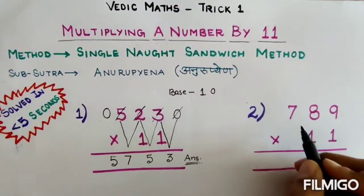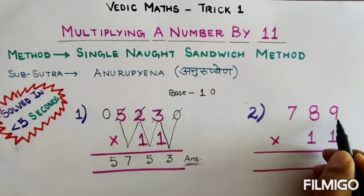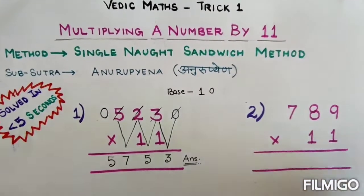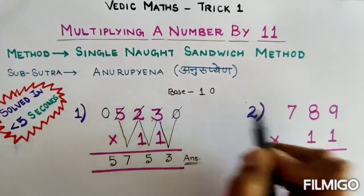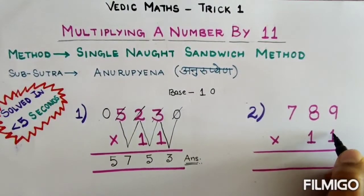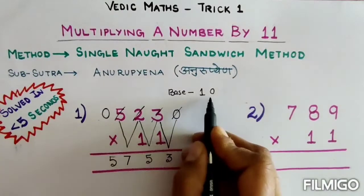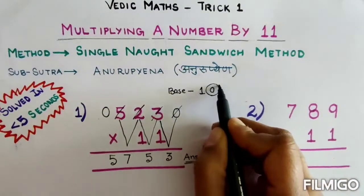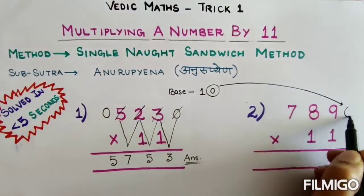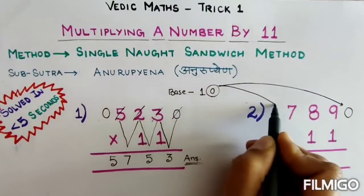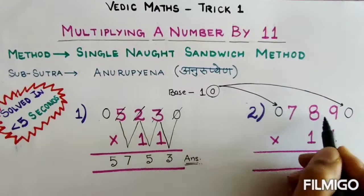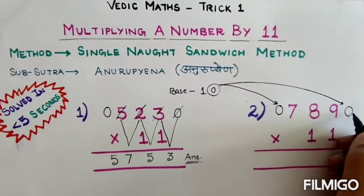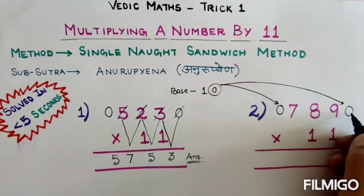Let's see this question: 789 multiply by 11. I will again apply the same method. Since I have to multiply by 11, the nearest base is 10. I will take this 0 on the right side and on the left side. I will sandwich 789 and repeat the same process from right to left, two numbers at a time.